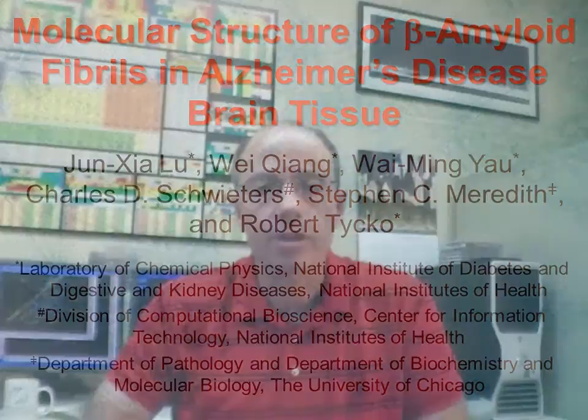Patients with Alzheimer's disease, or AD, develop amyloid deposits in the cerebral cortex and vasculature. These deposits contain aggregated, self-assembled forms of the beta-amyloid, or A-beta, peptide, especially A-beta fibrils.